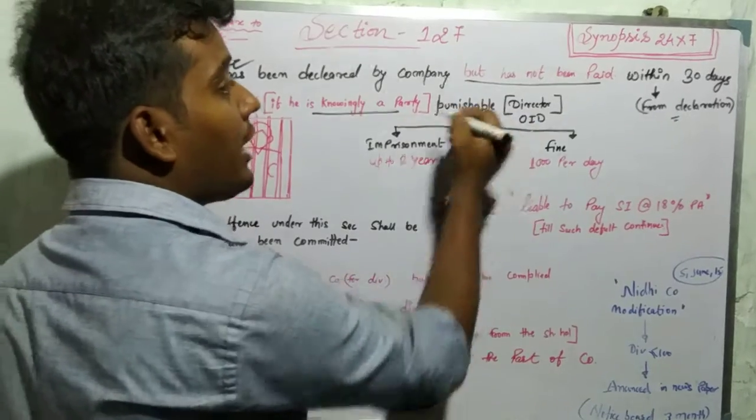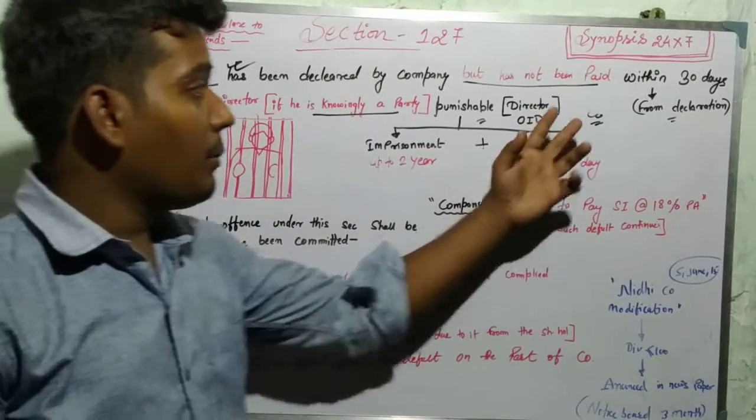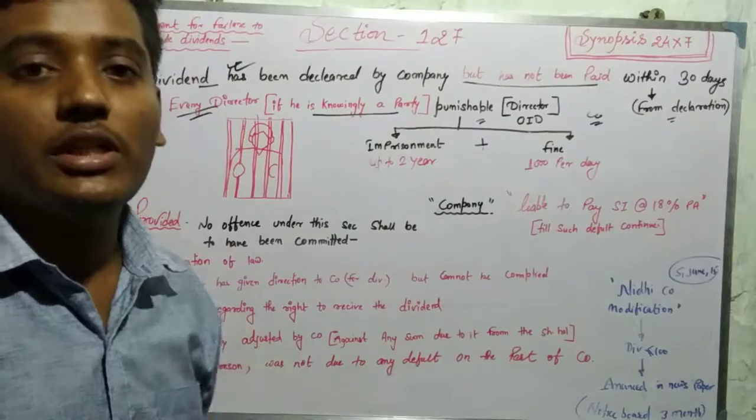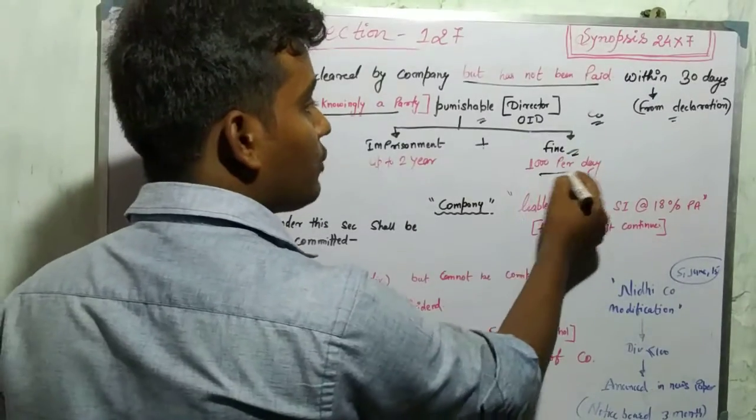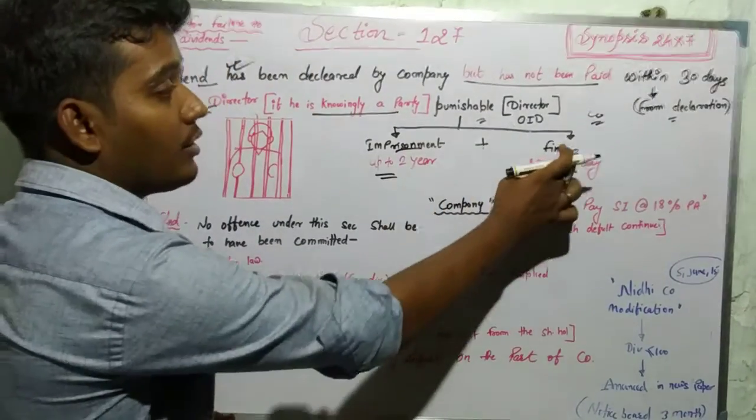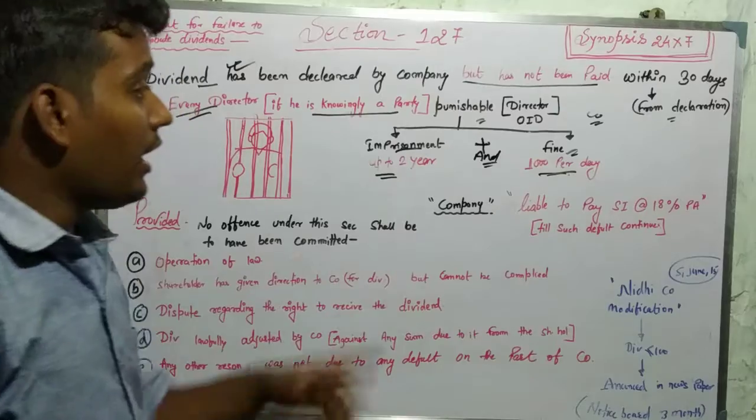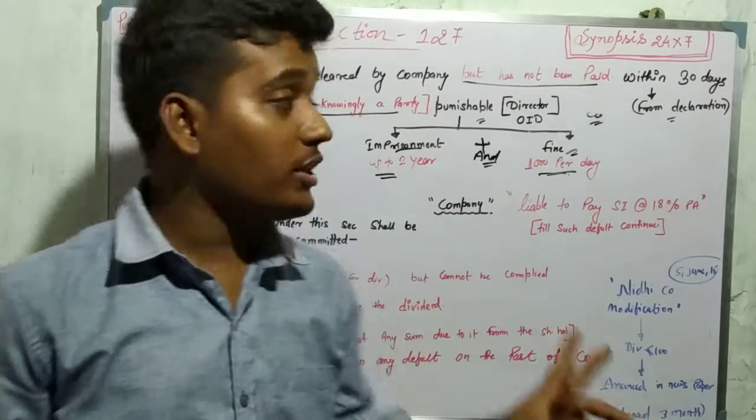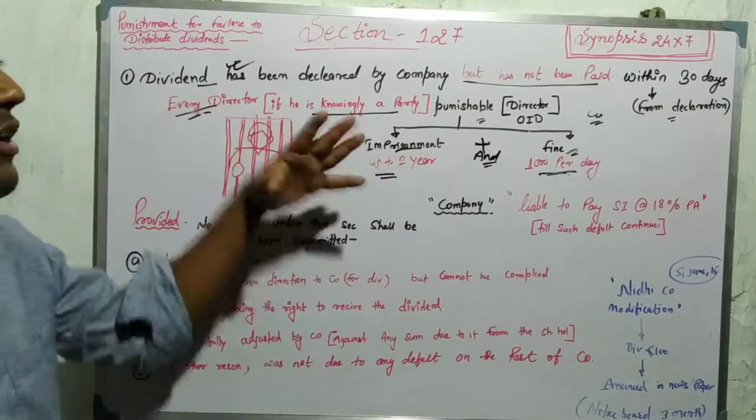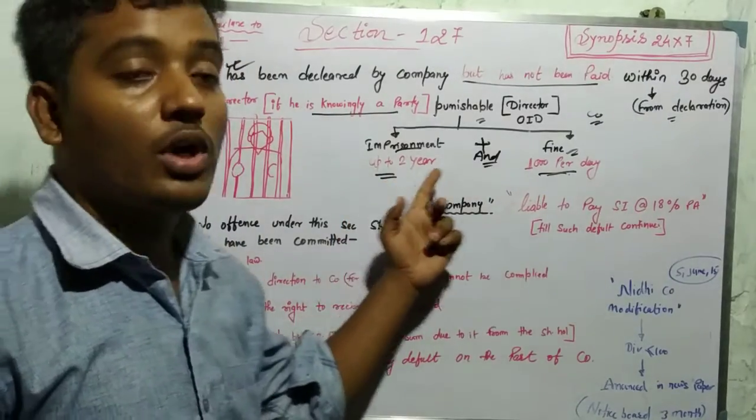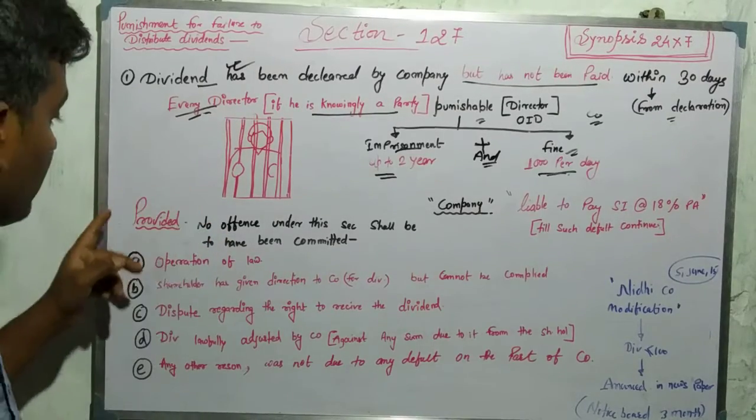So the director will be punished. The company will also be punished. Both will be punished. But will they send the company to jail? No, that's not possible. So the company will be fined 1,000 rupees. The director will get a fine from 1,000 rupees and imprisonment up to 2 years, or both. And the fine and imprisonment will continue due to default.